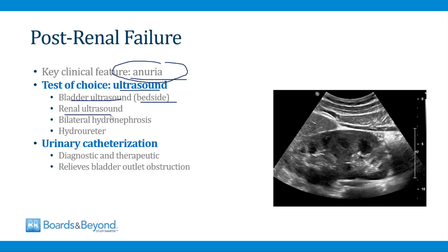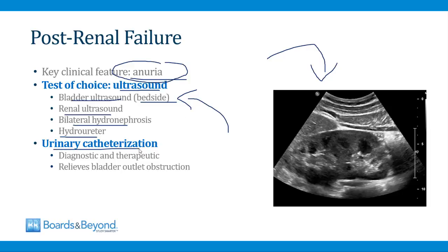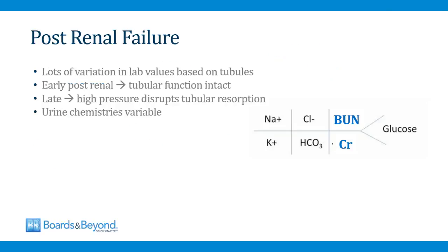In cases of post-renal failure, a renal ultrasound will show bilateral hydronephrosis and potentially hydroureter, which means a swollen ureter. In cases of AKI of unknown cause, an ultrasound of the bladder or kidneys is almost always the first step — before working up pre- and intrinsic renal failure, you want to quickly exclude post-renal failure. You can also perform urinary catheterization: if you insert a catheter and drain a large volume of urine, this implies bladder outlet obstruction — which is both diagnostic and therapeutic.